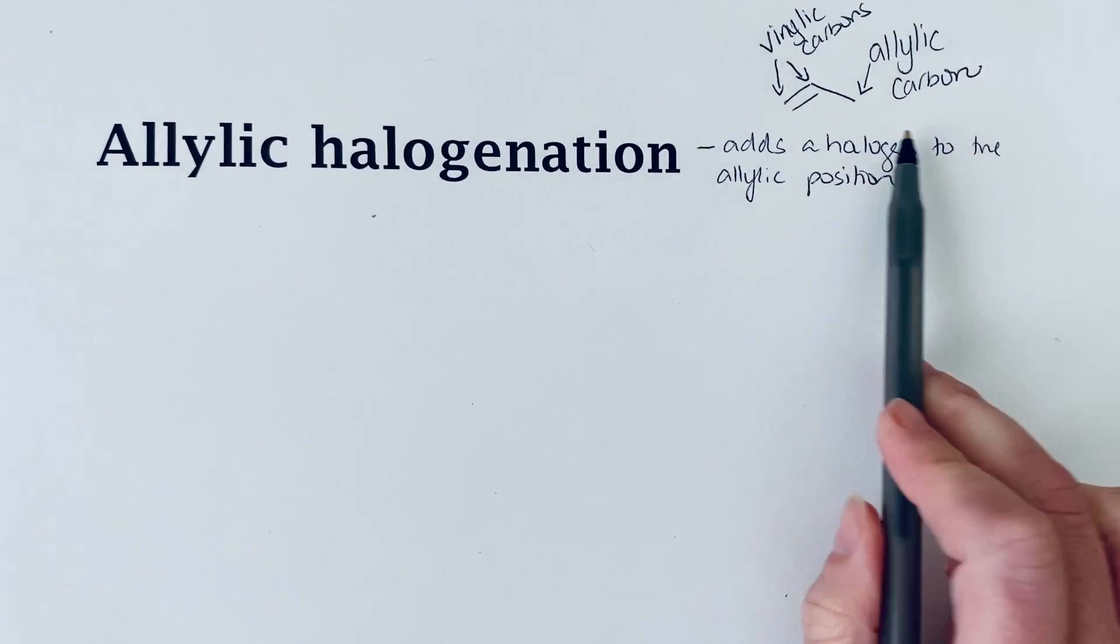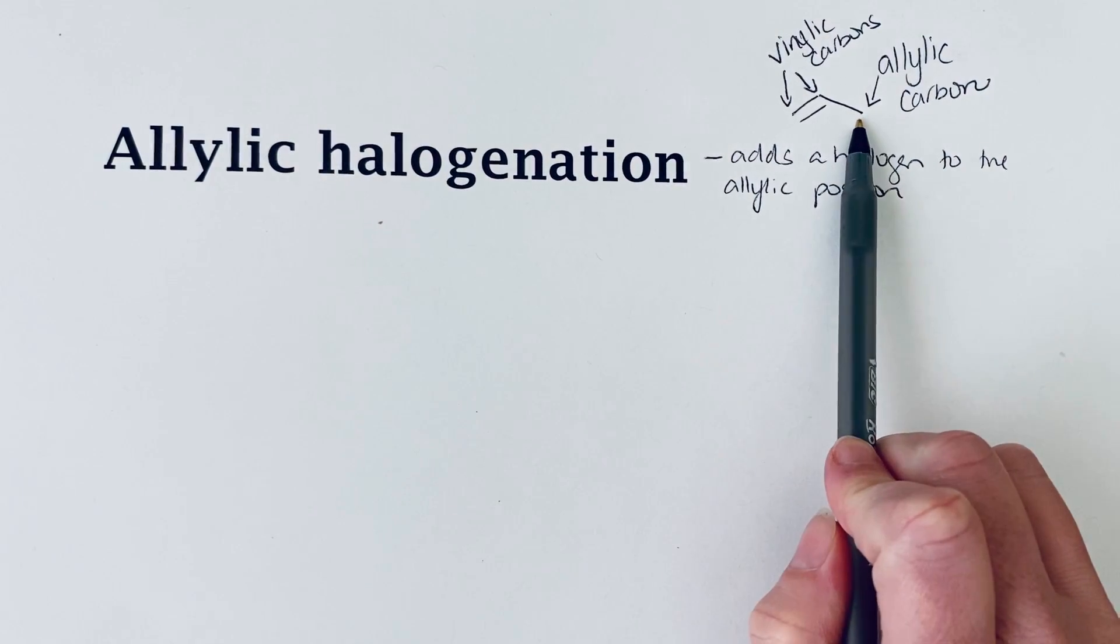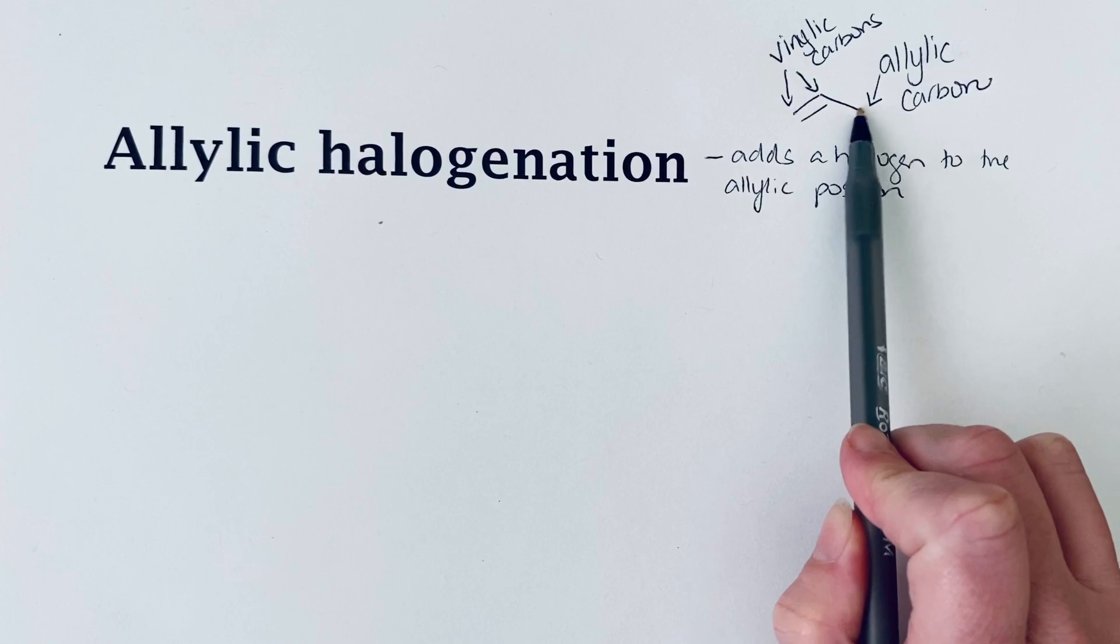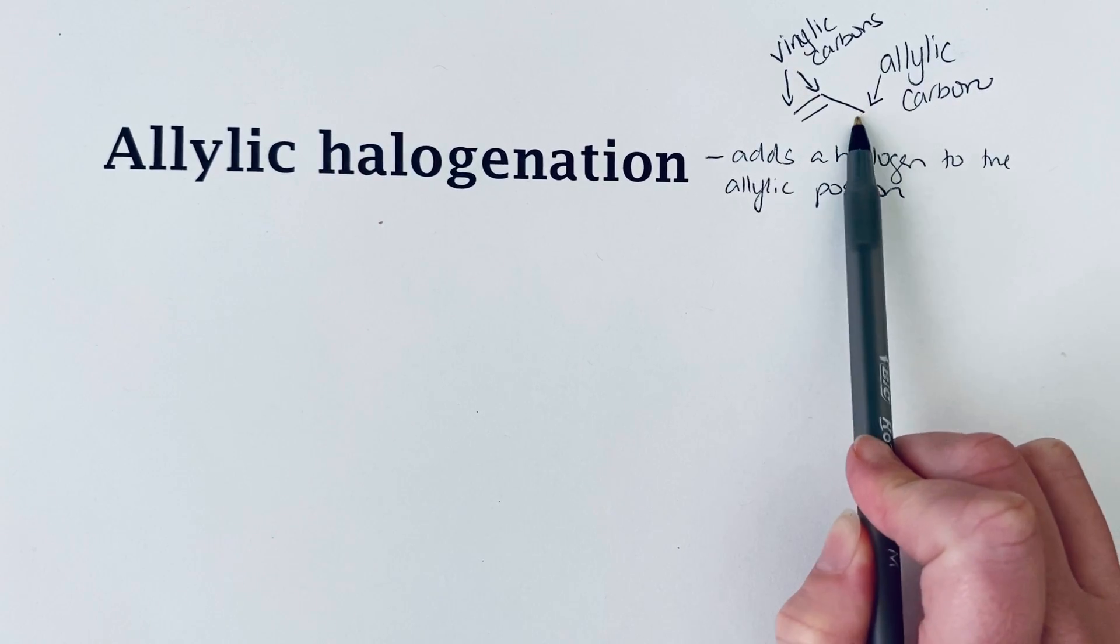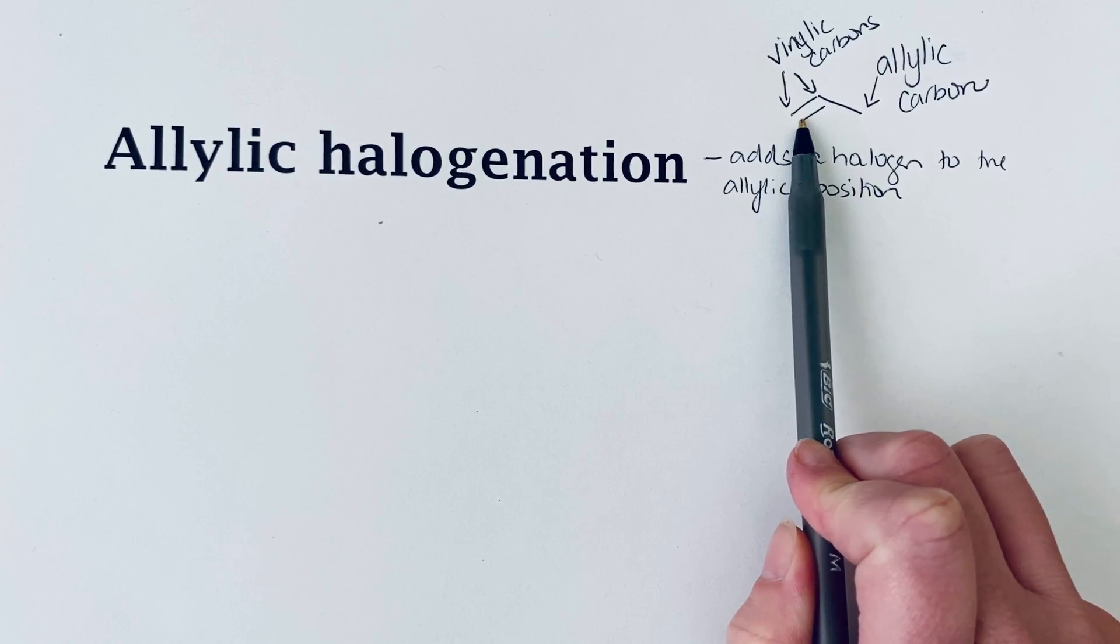The allylic carbon ends up being more reactive than just a normal sp3 hybridized carbon atom because reactive intermediates you form at this position can be resonance stabilized by the adjacent pi bond.